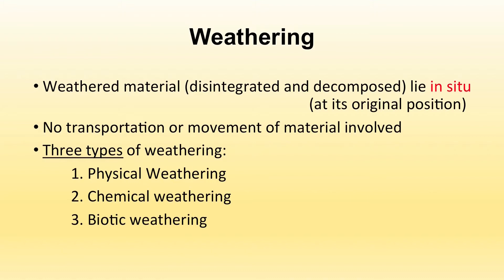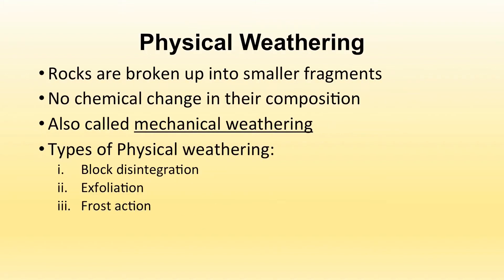There are three types of weathering: physical weathering, chemical weathering, and biotic weathering. Physical weathering means breaking up of rocks into smaller fragments with no chemical change involved; therefore it is also known as mechanical weathering. There are different types: block disintegration, exfoliation, and frost action.